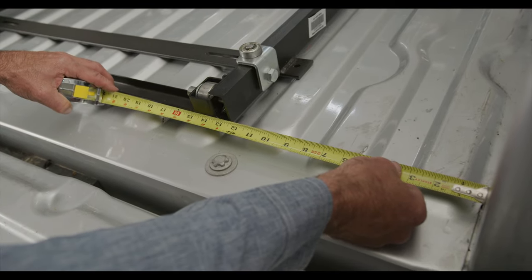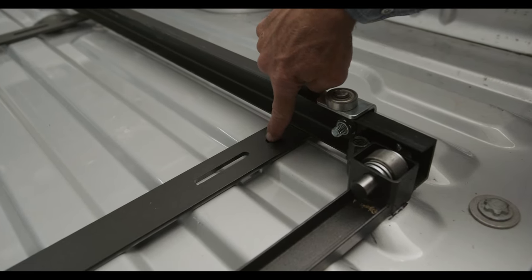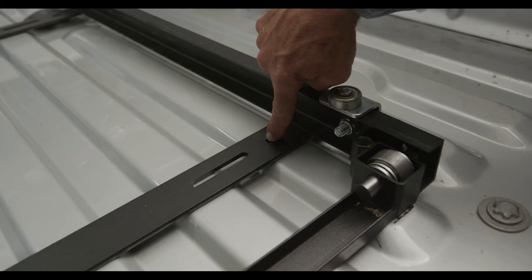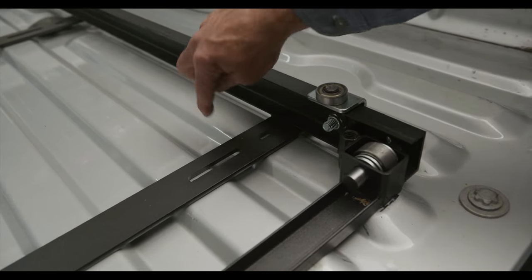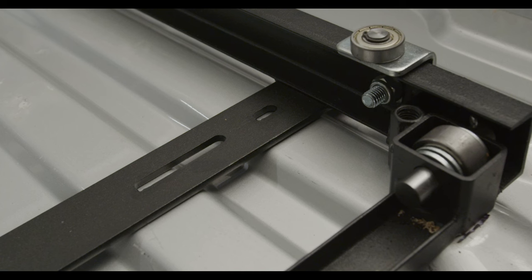Next, identify where you're drilling your holes according to your specific Cargo Glide's written instructions. It is critical that your slots on the mounting frame line up with the tops of the ribs in your bed. Your drilling locations must be at least one quarter inch from edges of the flat top rib surface.